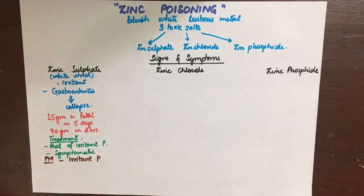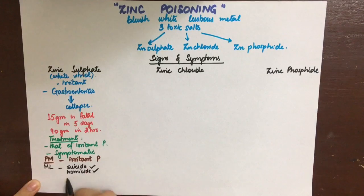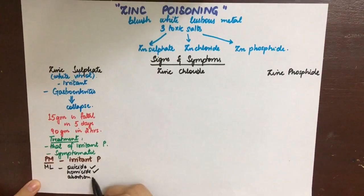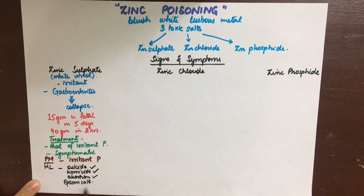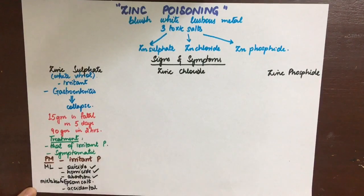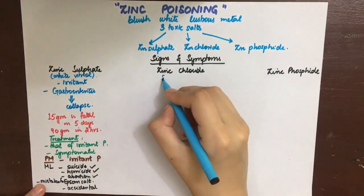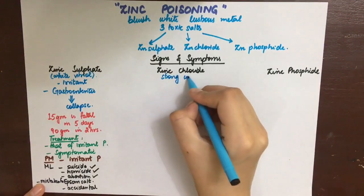The post-mortem appearances are also that of an irritant poison. Regarding medico-legal importance, it can be used in suicide, homicide, and abortion. Due to its appearance, it can be mistaken for Epsom salt, and accidental poisoning can occur by eating food cooked or stored in galvanized vessels.